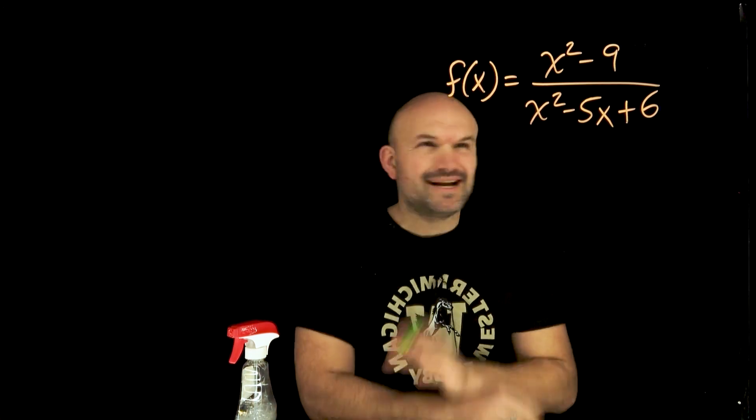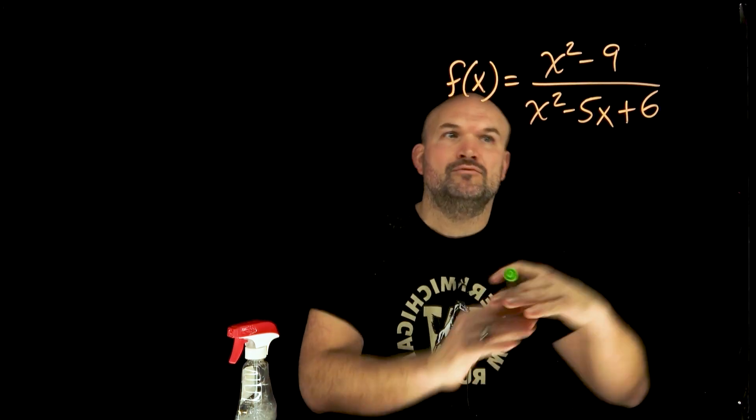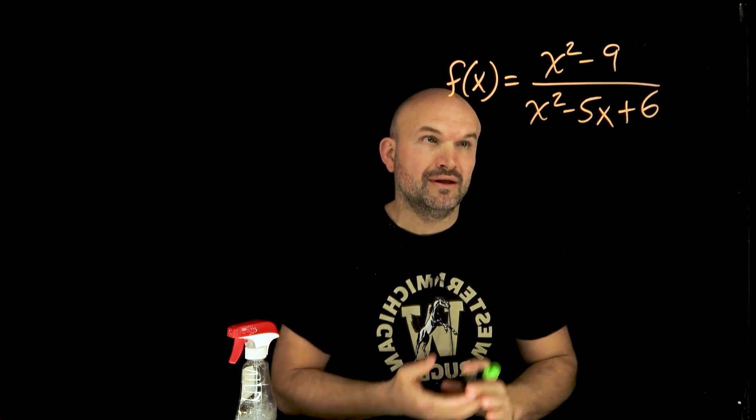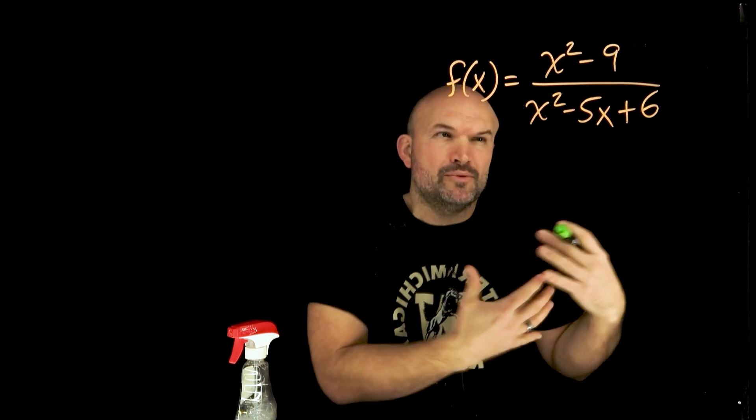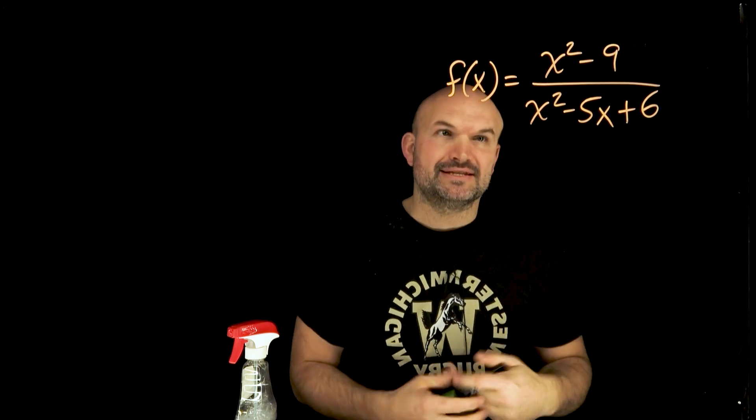So what's the difference between holes and asymptotes? I'm not talking about the textbook definition of one's removable, one's non-removable. I want to be able to see visually what exactly is the difference, or why does removable and non-removable even make any sense?